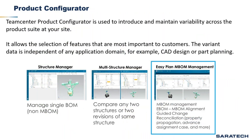Another major module that can be taken advantage of — when products are increasingly becoming more complex and customers are demanding greater individual choice — is Teamcenter product configuration. It allows selection of features that are most important to customers. For example, your company makes a car for the North American market and wants to expand to Europe. For England and Ireland, cars require right-hand steering and transmission controls. You begin by listing these features in a configurator dictionary, defining the variability of your entire product suite, and reusing common features across different product lines.